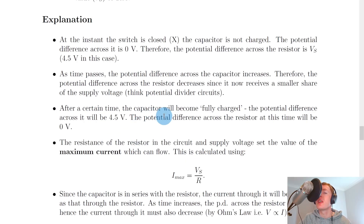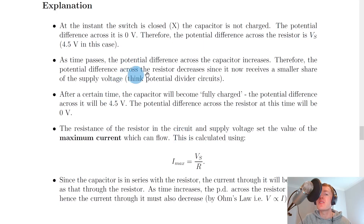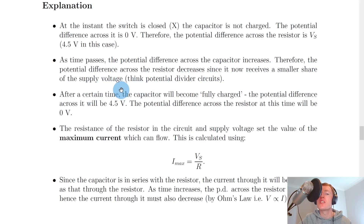To explain these results: at the instant the switch is closed at x, the capacitor is not charged, so the potential difference across it is 0 volts. Therefore the potential difference across the resistor at this point is Vs — 4.5 volts in this example. As time passes, the potential difference across the capacitor increases, so the potential difference across the resistor decreases, since it now receives a smaller share of the supply voltage — think potential divider circuits.